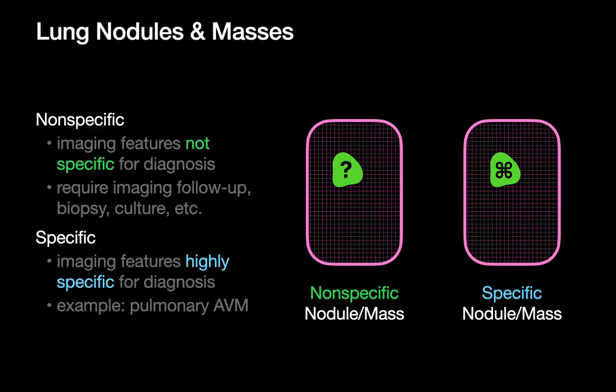To recap, nonspecific nodules and masses are ones where the imaging features on your CT scan are not sufficient or not specific for diagnosis. Oftentimes, some sort of additional work is required, whether that's follow-up imaging or something invasive like biopsy. Specific nodules are different in that their imaging features are highly specific for diagnosis, so you'll be able to figure out what it is even on a baseline imaging study.